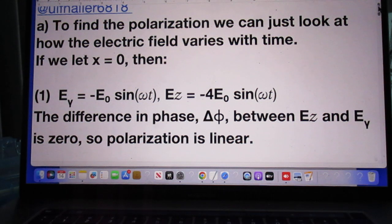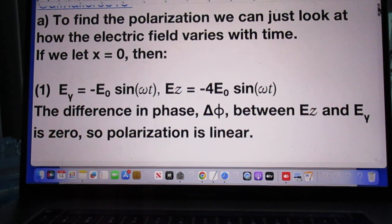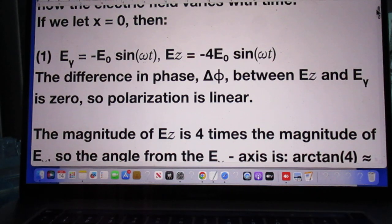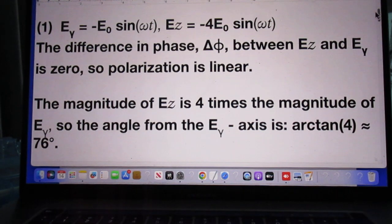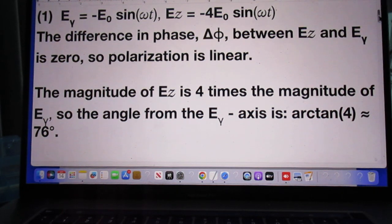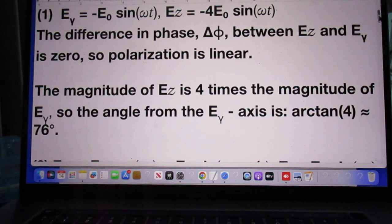So under A, to find the polarization, we can just look at how the electric field varies with time. So we choose x equals zero, and then it follows what you see here, E_y and E_z. The difference in phase delta phi between E_z and E_y is zero. So the polarization is linear.